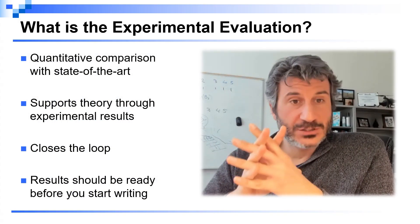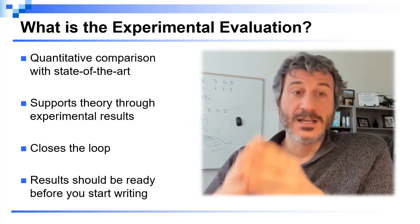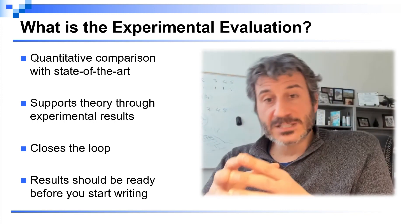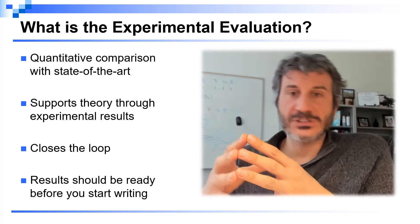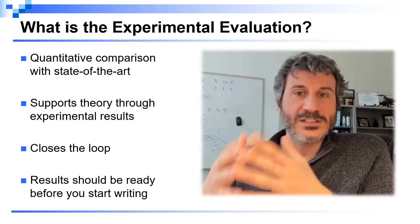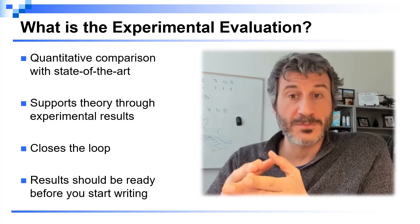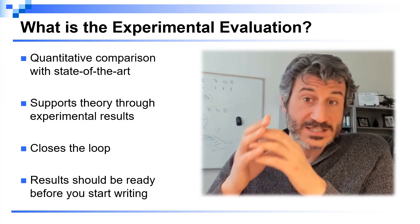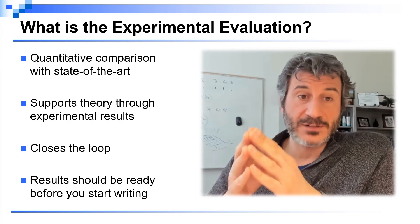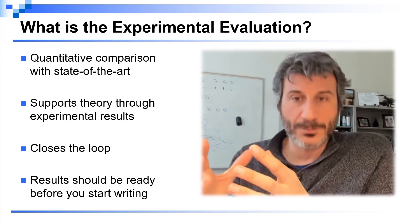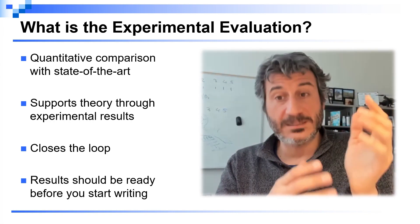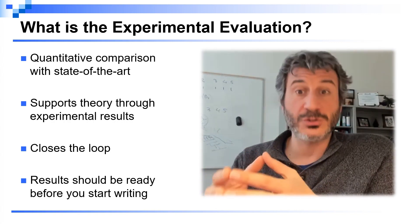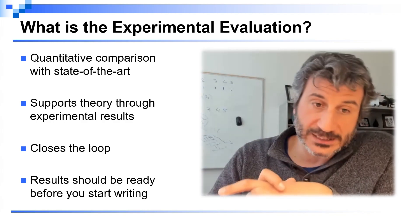The experimental evaluation section is where you provide a quantitative comparison of your solution with respect to the state of the art. In our papers we propose algorithmic solutions that maybe have nice theoretical properties, but then the question is how these solutions actually perform in practice and how they perform with respect to previous solutions that have been proposed for the same problem. In some sense it closes the loop after you have described in the related work what is the limitation of the literature, after you have proposed your solution and proved some formal properties.